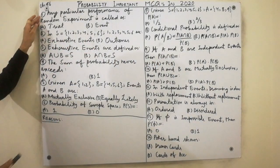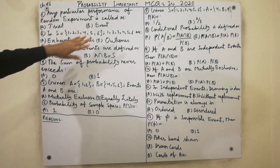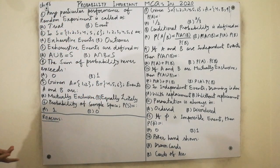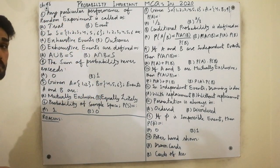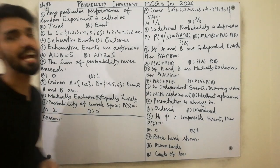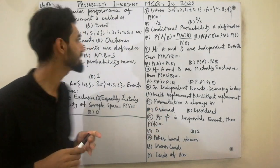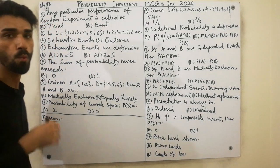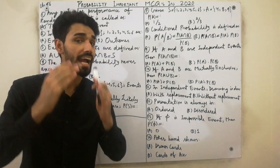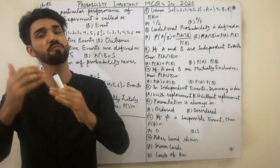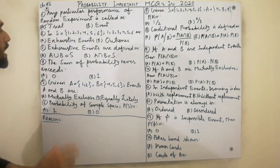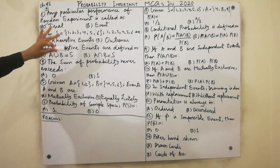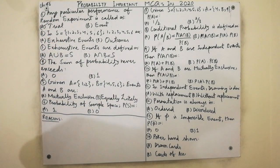Here is the first MCQ: any particular performance of a random experiment is called a trial. This is a very simple and important MCQ. Any particular performance of a random experiment is called a trial. Must remember this definition — it is very important for you.